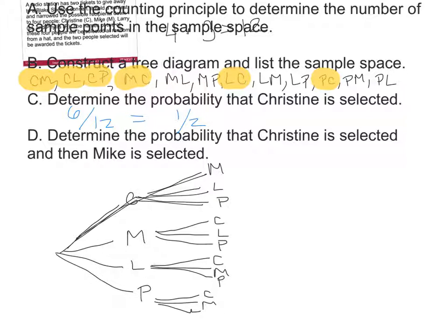Part D: There is only one situation where Christine is selected first and Mike is selected second — one out of 12 possibilities. So there's a 1 in 12 chance. The tree diagram helps you generate an organized list to identify these outcomes.